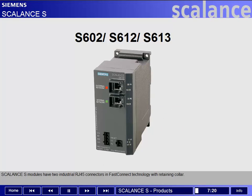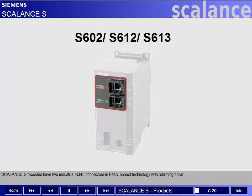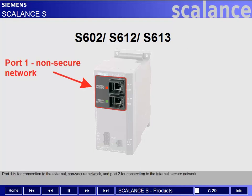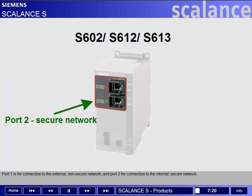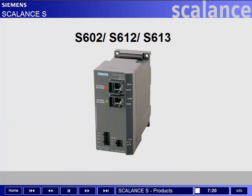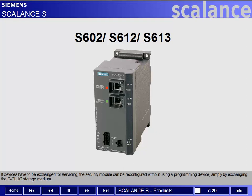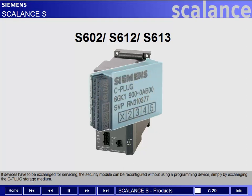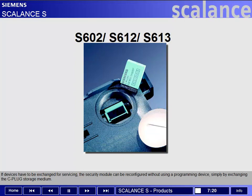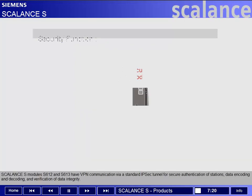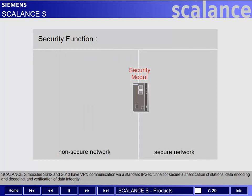Scalance S-Modules have two industrial RJ45 connectors in FastConnect technology with retaining collar. Port 1 is for connection to the external non-secure network, and Port 2 for connection to the internal secure network. If devices have to be exchanged for servicing, the security module can be reconfigured without using a programming device, simply by exchanging the C-plug storage medium.